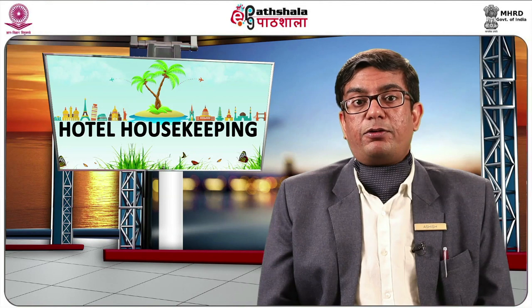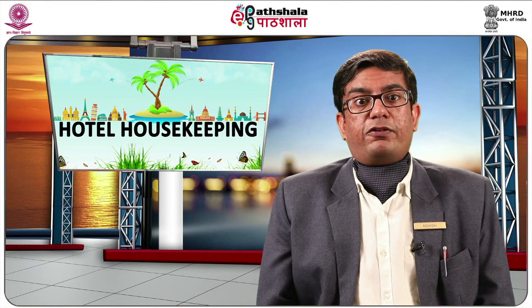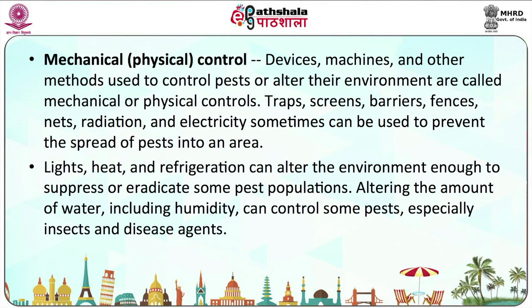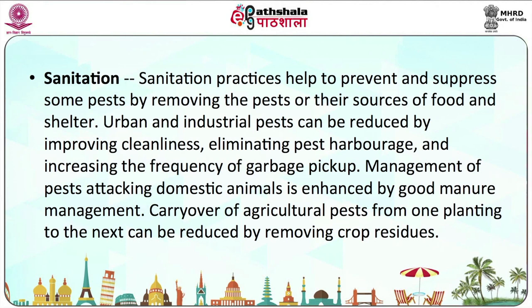These methods are at a macro level. In hotels in particular, we use micro level methods. Pests can be altered in an environment using mechanical or physical controls. Traps, screens, barriers, fences, nets, radiation, and electricity can sometimes be used to prevent the spread of pests into an area. Lights, heat, and refrigeration can alter the environment to suppress or eradicate some pest populations. Altering the amount of water, including humidity, can control some pests, especially insects and disease agents.